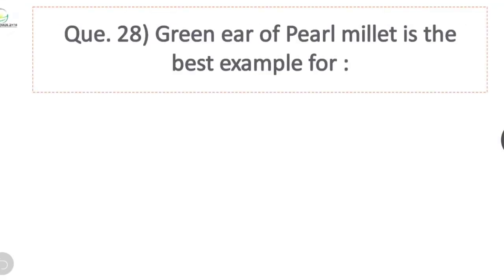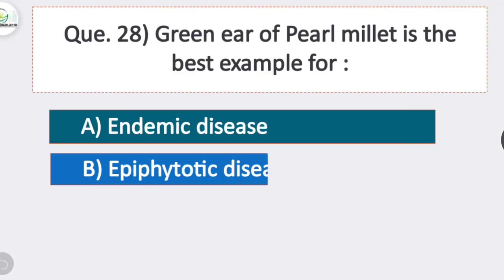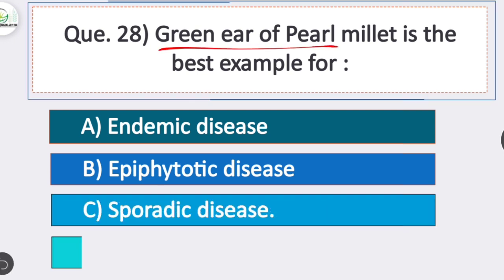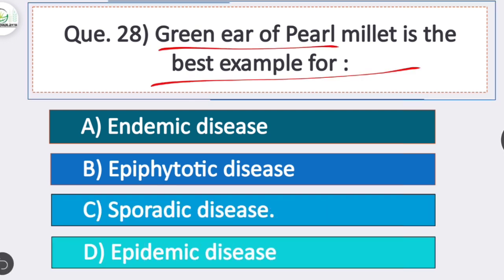Question 28: green ear of pearl millet is the best example for? Option C is correct — sporadic disease. Green ear of pearl millet is the best example of a sporadic disease, which occurs at very irregular intervals and locations.